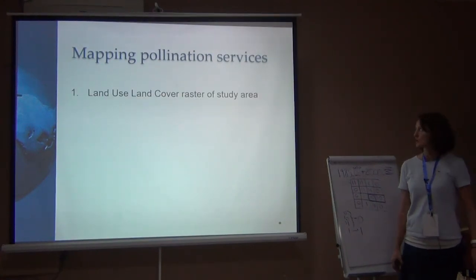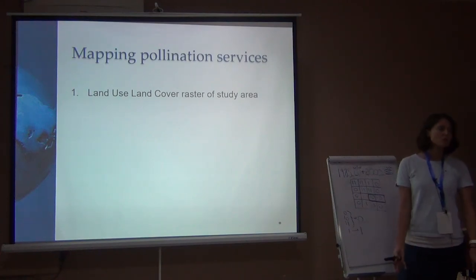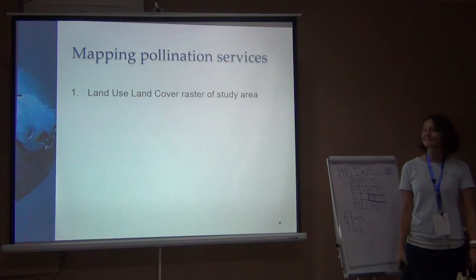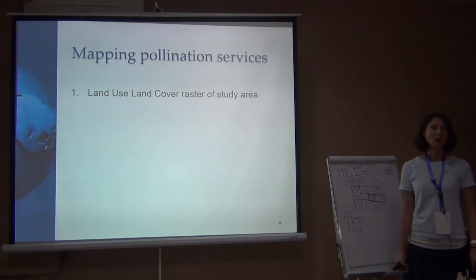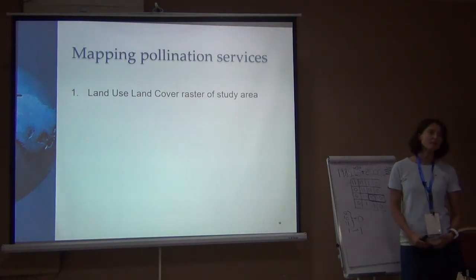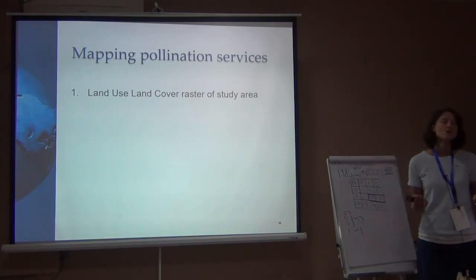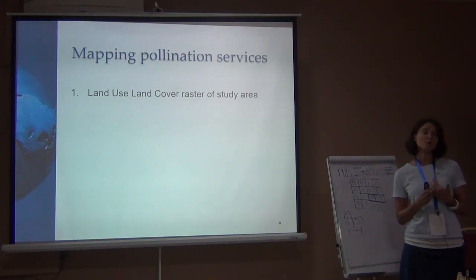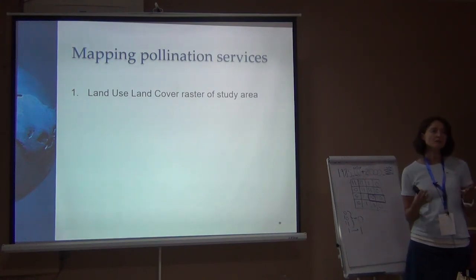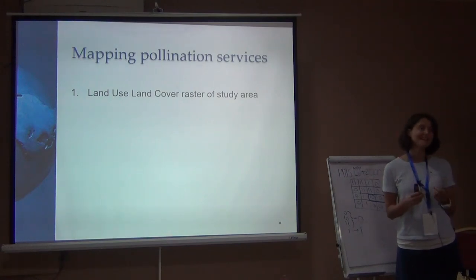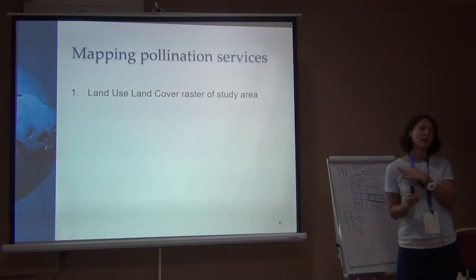We're trying to map this ecosystem service, and it requires certain inputs. The first input is a land-use, land-cover raster of the area. The raster should have a spatial resolution fine enough to capture the movement of bees in your area. If you have a land-use, land-cover raster at one kilometer spatial resolution and the majority of bees in your area are small-bodied bees that only travel 50–100 meters, you can't use this tool — it just won't capture those bee movements.